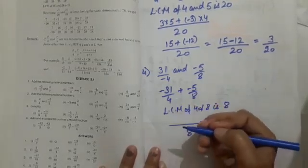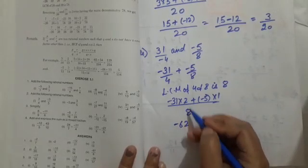Now again different denominators, so LCM procedure. 4 and 8, what will come? 8 will come. 4 to 8, multiply by 2, so numerator also multiply by 2. And this is already 8, to keep it same we multiply by 1.